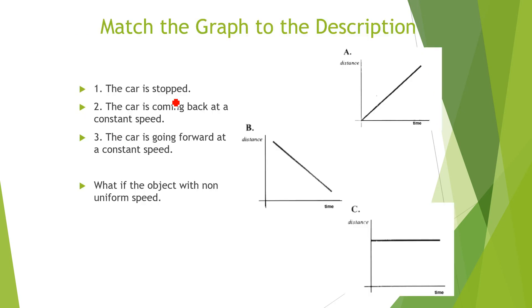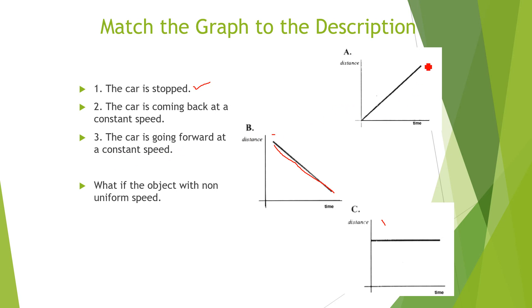Here are all three graphs A, B, and C with different cases. Let's match these graphs with their descriptions. Number one: the car is stopped — this is represented by graph C, a horizontal line where the car is not moving. Number two: the car is coming back at a constant speed — the line goes downward, starting away from the reference point and coming nearer. Number three: the car is going forward at a constant speed — the slope is positive, representing forward motion.